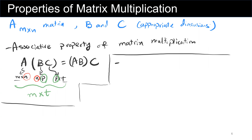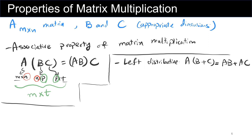The second property is the left distributive property: matrix A multiplied by (B plus C) equals matrix A multiplied by B plus AC. For dimensions, A is n by m, so B and C should both be m by p — they must have the same dimension because we are adding them.